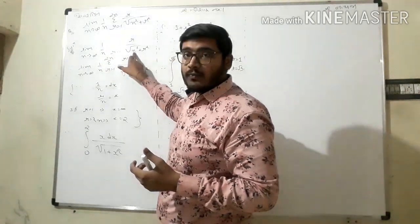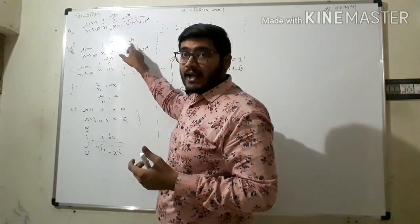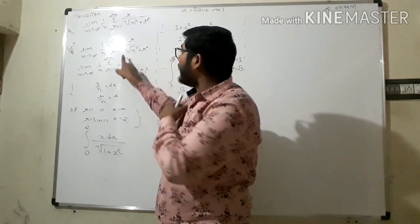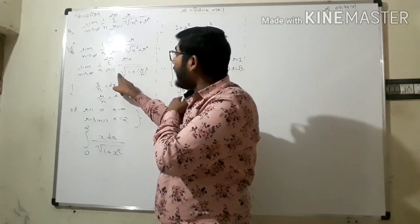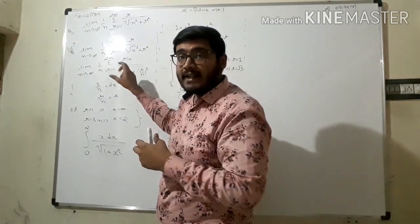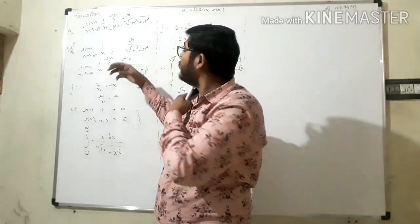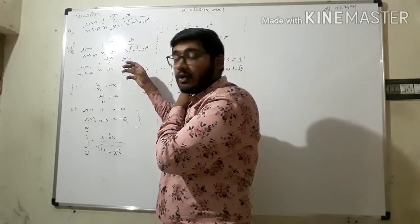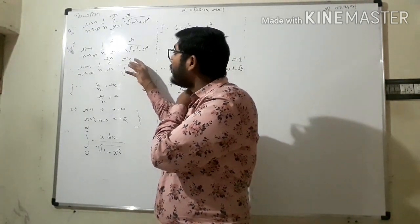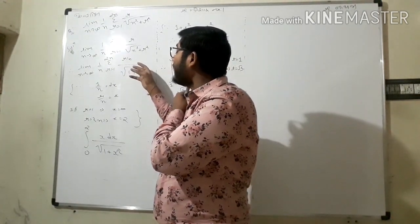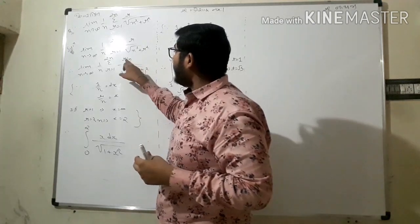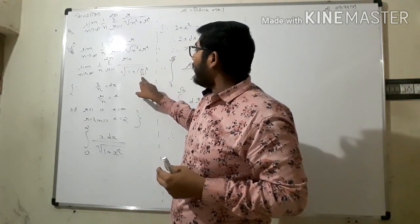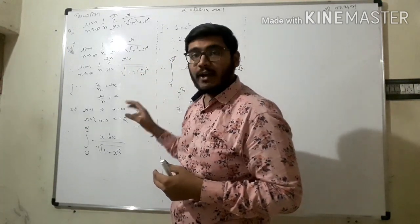Now, taking n common out from the denominator under the square root — n common out — so it becomes r upon n, divided by under root of one plus r upon n, squared.